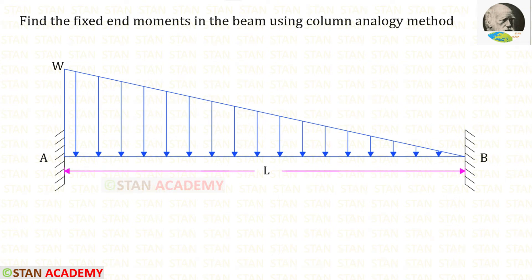Hello everyone. Today we are going to find the fixed end moments in this beam using the column analogy method. In this fixed beam there is a uniformly varying load. It varies from 0 at point B to W at point A.